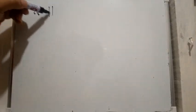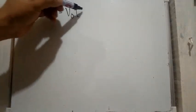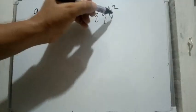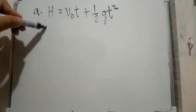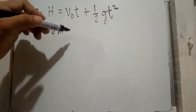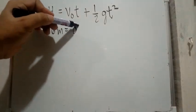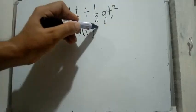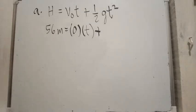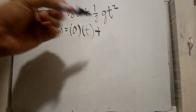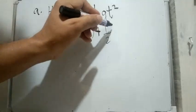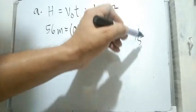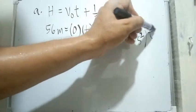So for letter A, height h equals v sub o times t plus one-half g t squared. Our height is 56 meters, initial velocity is zero times time t, plus one-half times 9.8 m/s² times t squared.